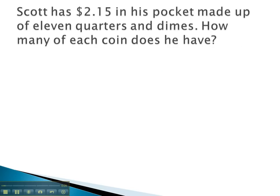In this problem, Scott has some money in his pocket. You recall that the value table that we set up was we took the number times the value of each individual piece would equal the total value in those pieces. Here, Scott has quarters and dimes.